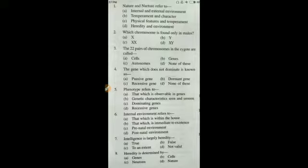Question number five: phenotype refers to that which is observable. The options include genetic characteristics seen and unseen. The correct answer is A — that which is observable.